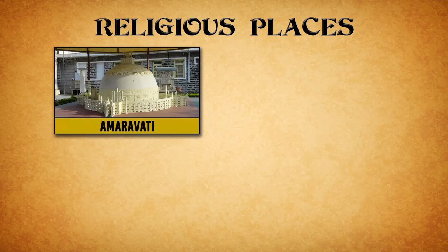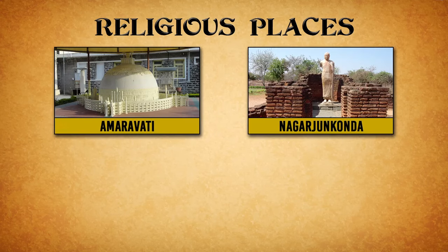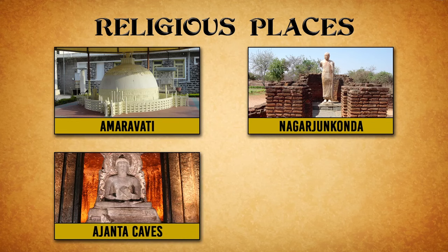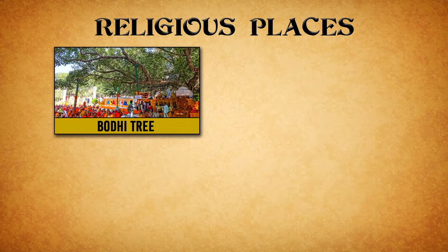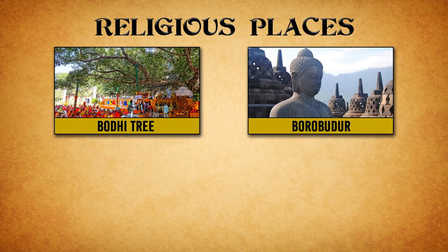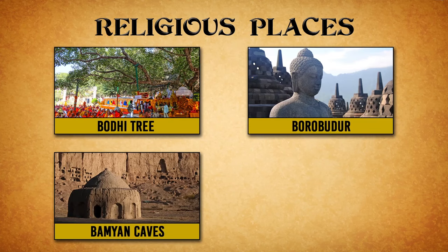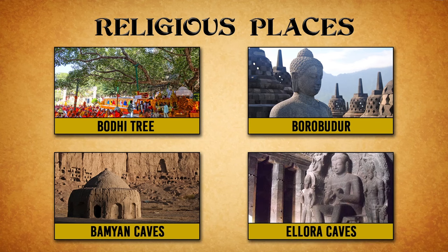Some of the religious places in Buddhism are Amaravati, Nagarjunakonda, Ajanta Caves, Angkor Wat in Cambodia, Bodhi tree in Bodhgaya, Borobudur in Indonesia, Bamiyan Caves in Afghanistan and Ellora Caves.